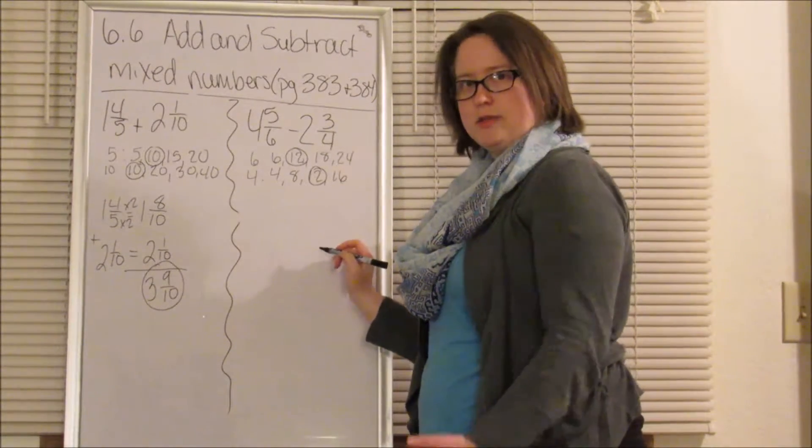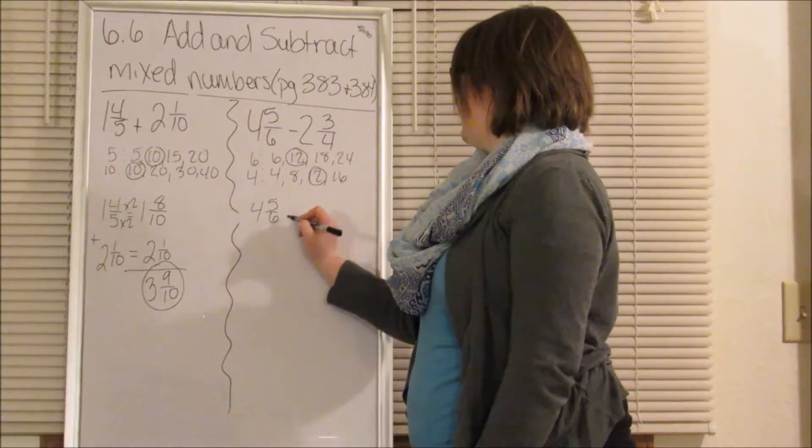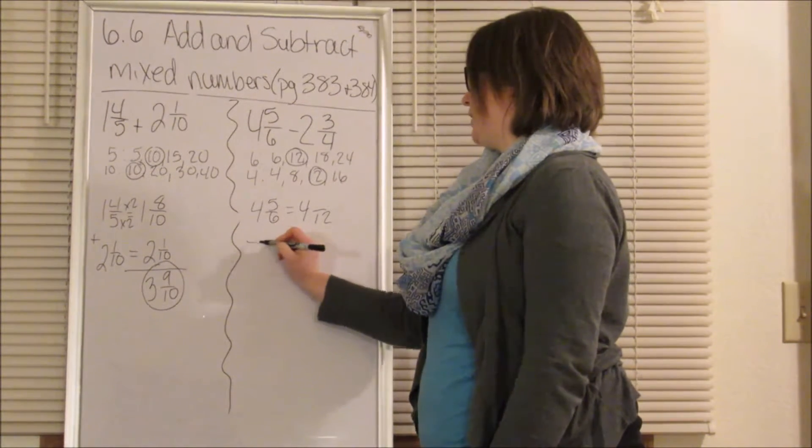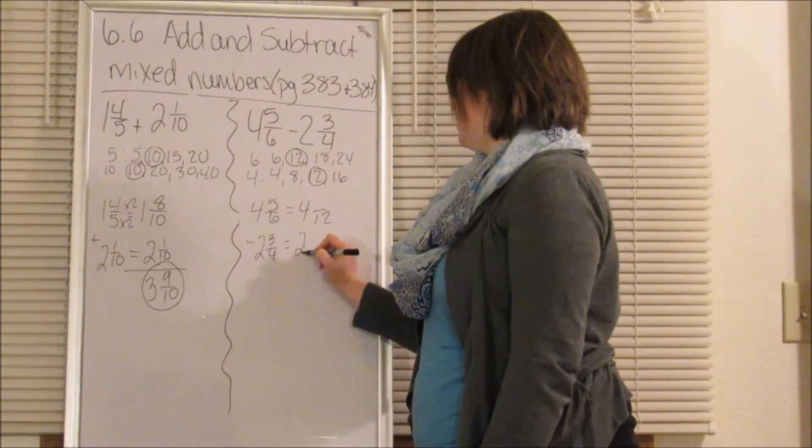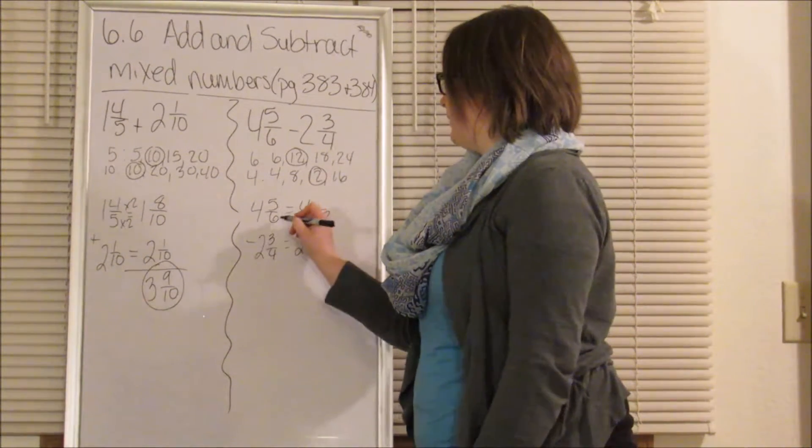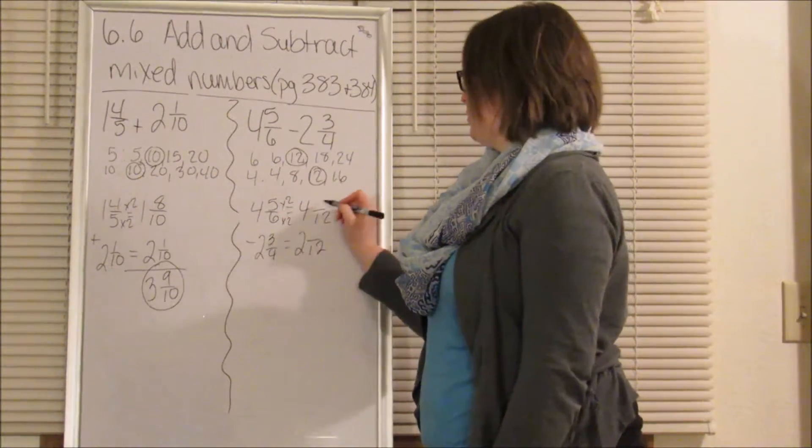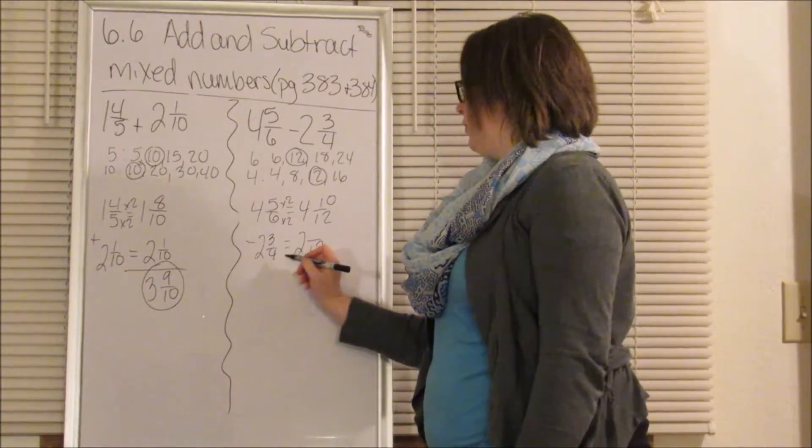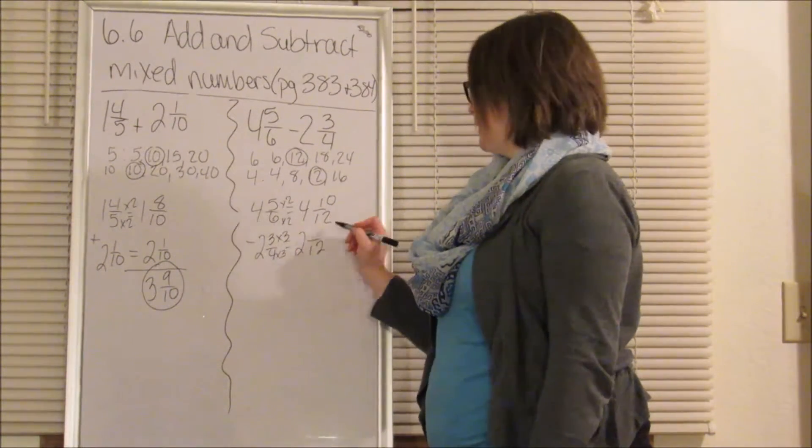So now we need to rewrite our fractions so that they are equivalent. 4 and 5/6 is going to equal 4 and something over 12. We're subtracting. 2 and 3 fourths is going to equal 2 and something over 12. So what do we do to 6 in order to get 12? Well, we multiply it by 2, which means we're going to multiply our 5 by 2. So 5 times 2 is 10. What do we do to 4 in order to get 12? Well, we multiply it by 3, which means we're going to multiply our 3 by 3. And 3 times 3 is 9.